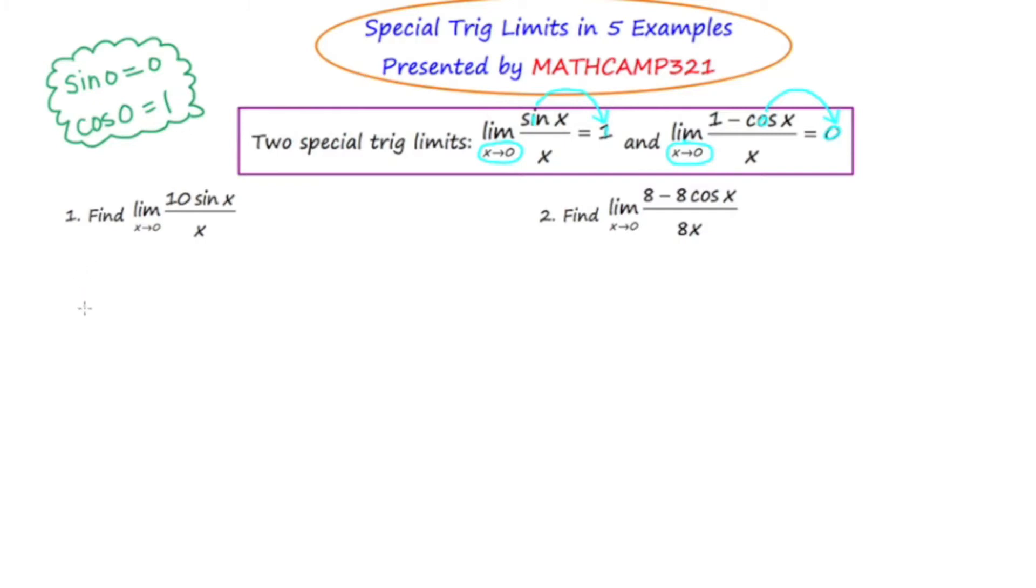Okay, having said that, let's start. Question number one says, find the limit of the expression 10 sine x over x as x approaches 0. So just imagine if we took 0 and plugged it in here, and took 0 and plugged it in here, we'd end up with 10 times 0 over 0 or 0 over 0. Indeterminate form, you can't do it. Well, that doesn't mean the problem can't be done. We just need to use these special trig limits.